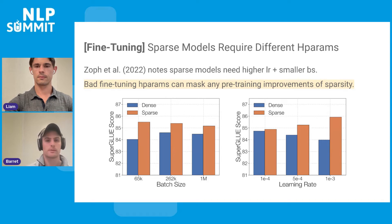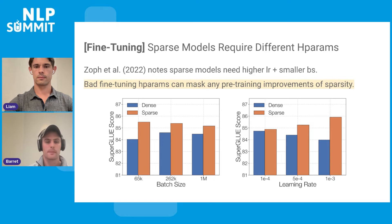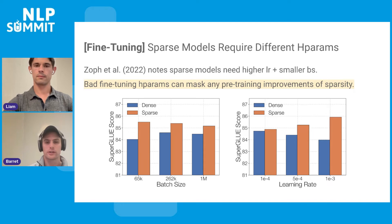A lot of other improvements have gone into fine-tuning sparse models. As previously discussed, there's a discrepancy between sparse and dense models on pre-training and fine-tuning performance. One way to remedy this is through better hyperparameter selection during fine-tuning — if you use bad hyperparameters, they can mask the pre-training improvements of sparsity. We study two key hyperparameters: batch size and learning rate. For sparse models, the smallest batch size is preferred during fine-tuning, while for dense models, the largest batch size is preferred. Similarly, sparse models prefer the largest learning rate and dense models prefer the smallest. This aligns with the hypothesis that since sparse models have many more parameters, they are more likely to overfit, and small batch size with a larger learning rate are known good regularizers.